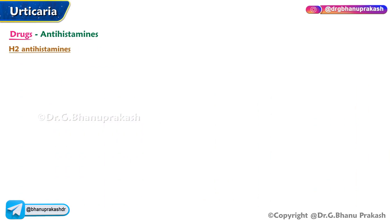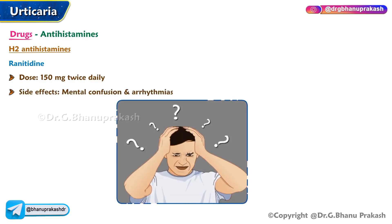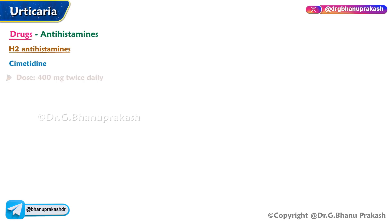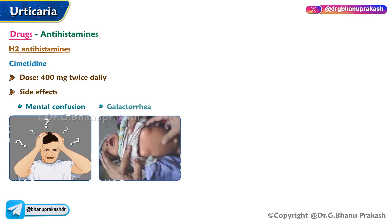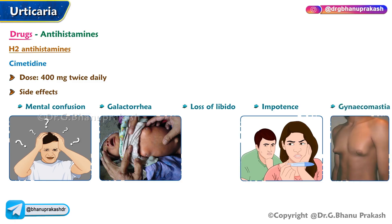H2 antihistamines: ranitidine dose 150 milligrams twice daily, side effects include mental confusion and arrhythmias, pregnancy category B. Cimetidine dose 400 milligrams twice daily, side effects include mental confusion, galactorrhea, loss of libido, impotence, and gynecomastia, pregnancy category B.